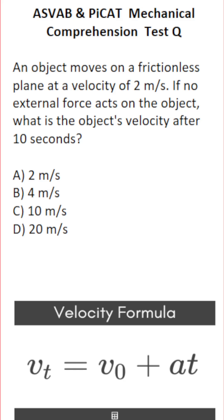This mechanical comprehension practice test question for the ASVAB and PyCat says an object moves on a frictionless plane at a velocity of two meters a second. If no external force acts on the object, what is the object's velocity after 10 seconds?